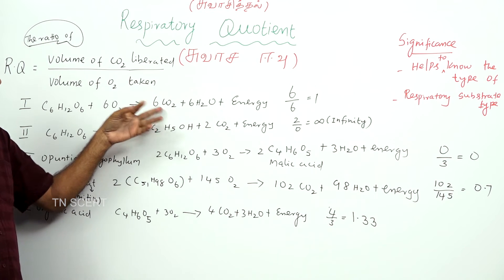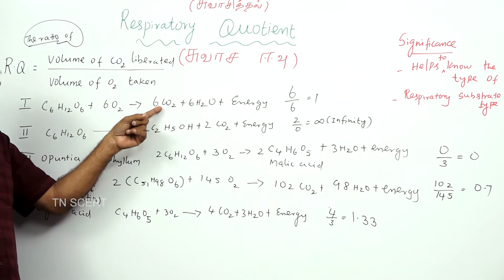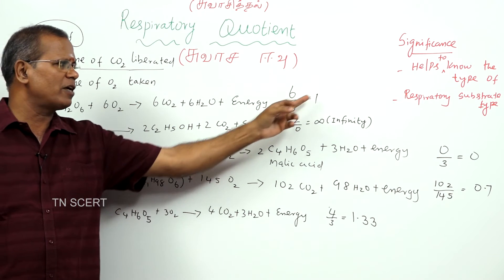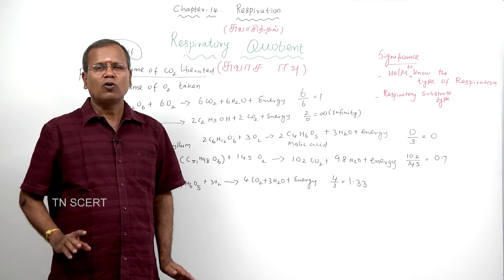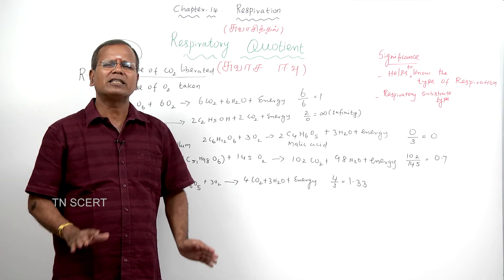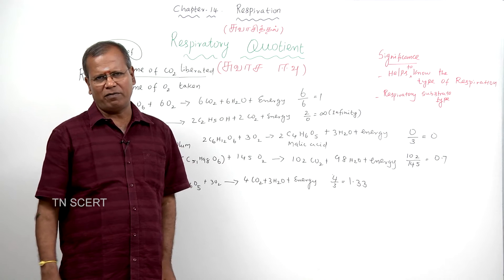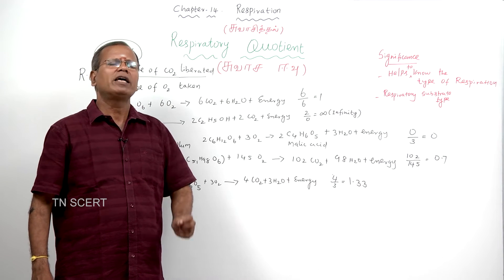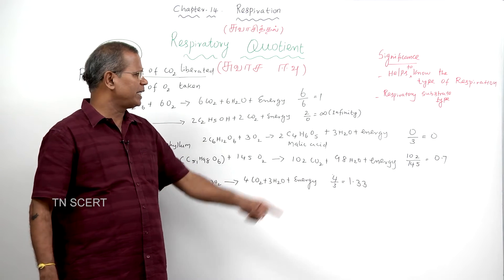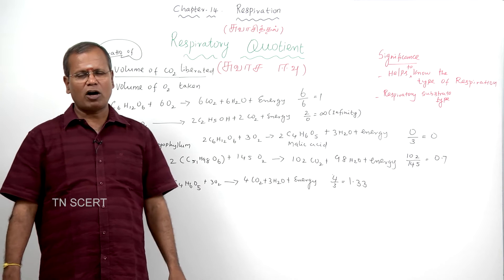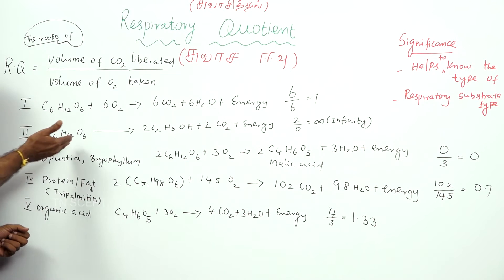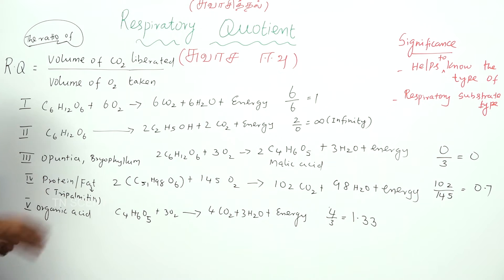So, the volume of carbon dioxide liberated divided by the volume of oxygen taken: 6 by 6 is equal to 1. The respiratory quotient of aerobic respiration using glucose (carbohydrate) is 1.